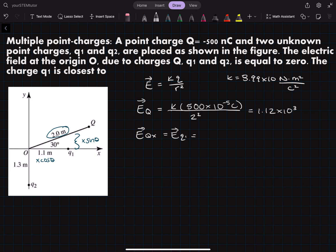So we'll write it out to be 1.12 times 10 to the power of 3 times cos of 30 which is our angle here, our theta. So when we put this all together we're going to get a value of 970.